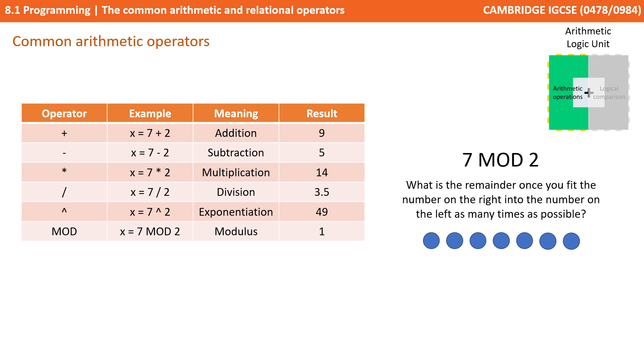Next, we have two commands related to division on whole integer numbers. And the first is mod, which is short for modulus. So what does the equation 7 mod 2 do? Well, it's what is the remainder once you fit the number on the right into the number on the left as many times as possible.